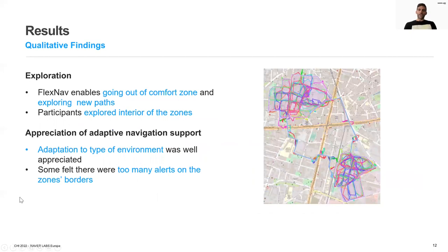When analyzing the qualitative findings, we see that participants felt that FlexNav enabled them to go out of their comfort zones to explore new paths in unknown locations with less disruptions and directions, which gave them a sense of freedom. Having several zones with different characteristics constituted an additional motivation for many participants, as they were interested in what they might find in the following zones. They appreciated the adaptive navigation support but still considered that there were many alerts on the zone borders, which is reflected in how they explored the zones — mostly focusing on internal paths and avoiding the wrong exits.